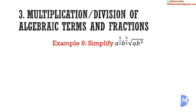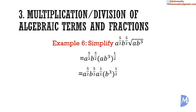Example 6. Simplify: a to the power 5 over 2, multiplied by b to the power 5 over 2, multiplied by the square root of ab cubed. The square root of a quantity is the same as the quantity raised to the power of a half, and this applies to each term. So we have a to the power of a half and b cubed to the power of a half. b cubed raised to the power of a half equals b to the power of 3 over 2. For the a terms, a to the 5 over 2 multiplied by a to the half gives a to the 6 over 2, which equals a to the 3rd power. For the b terms, b to the 5 over 2 multiplied by b to the 3 over 2 gives b to the 8 over 2, or b to the 4th power.